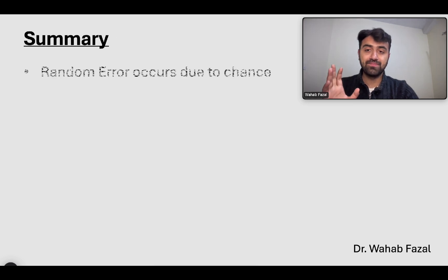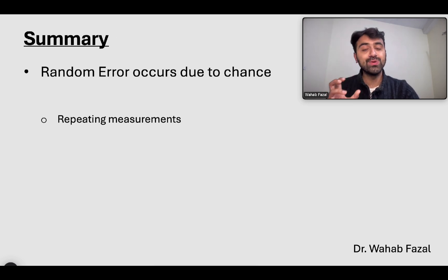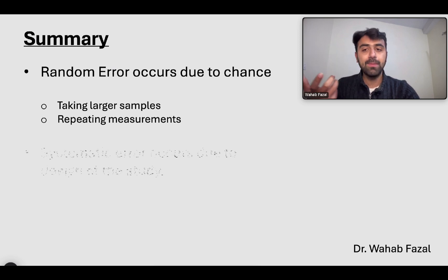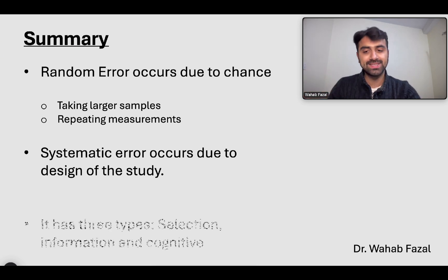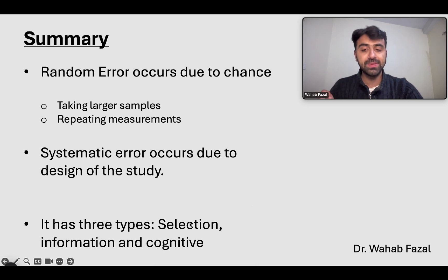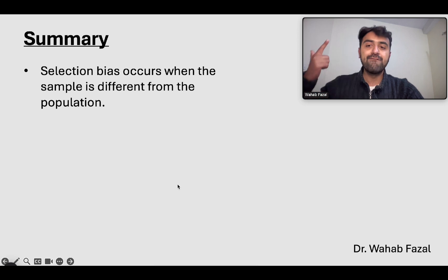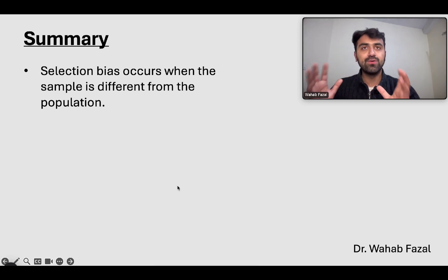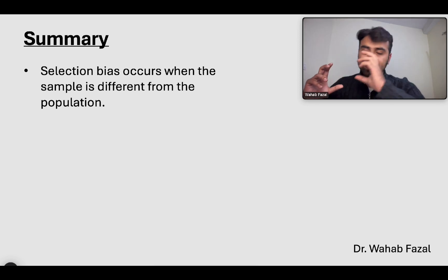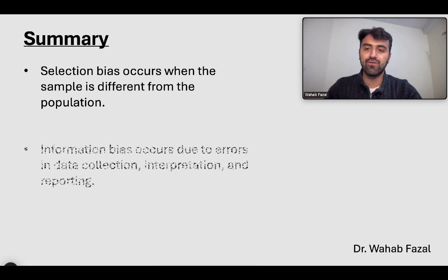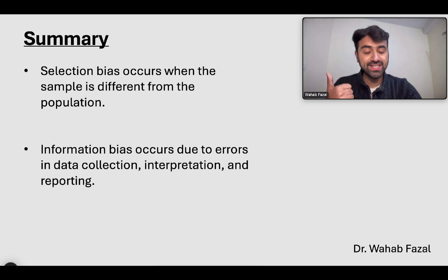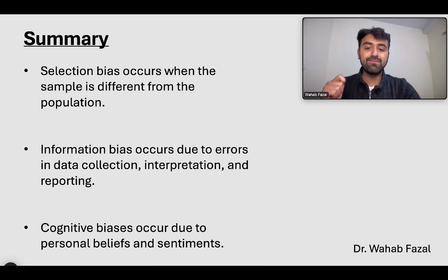The main takeaways of this lecture: Random error occurs due to chance — to reduce it, repeat measurements and take larger samples. Systematic error occurs due to fundamental flaws in the design of the study — to tackle it, design the study better and improve your instruments. It has three subtypes: selection bias, information bias, and cognitive bias. Selection bias occurs when the sample is different from the population. Information bias occurs due to errors in data collection, interpretation, and reporting. Cognitive bias occurs due to personal beliefs and sentiments that get in the way of your study.